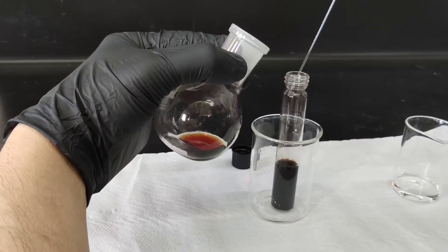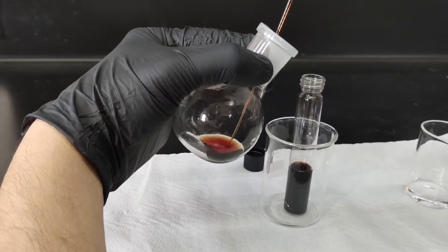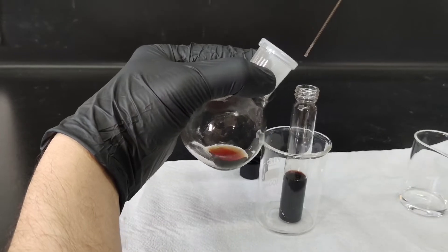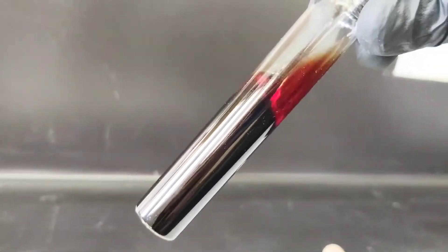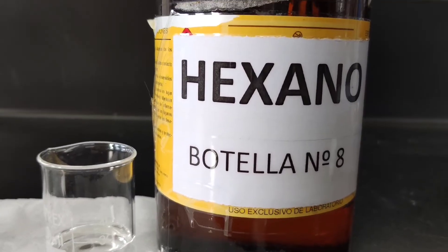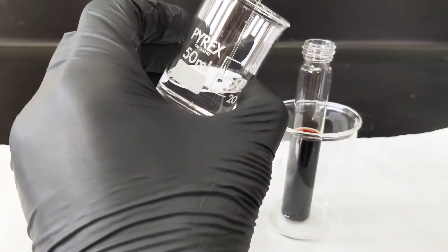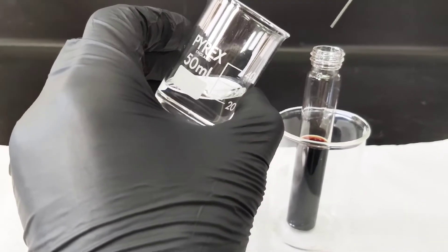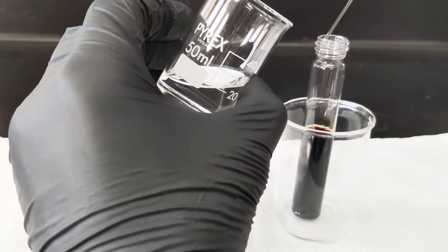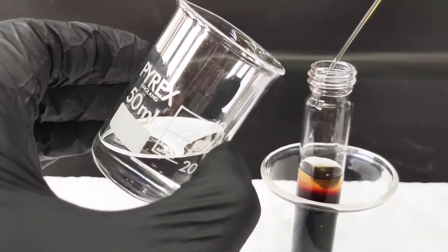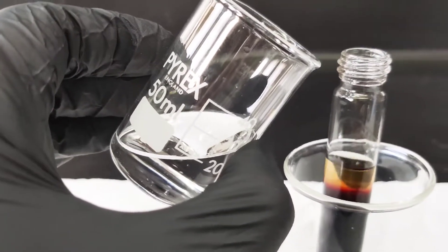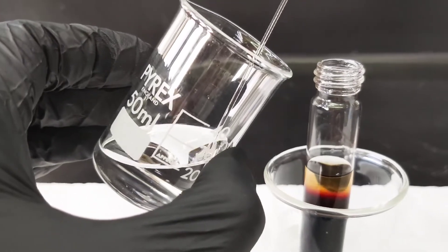We wash the remains of the round bottom flask with more DCM and pour it into the long vial. We mix it and then we add normal hexane slowly and carefully layering on top of the DCM solution. This is a crystallization method called slow diffusion.